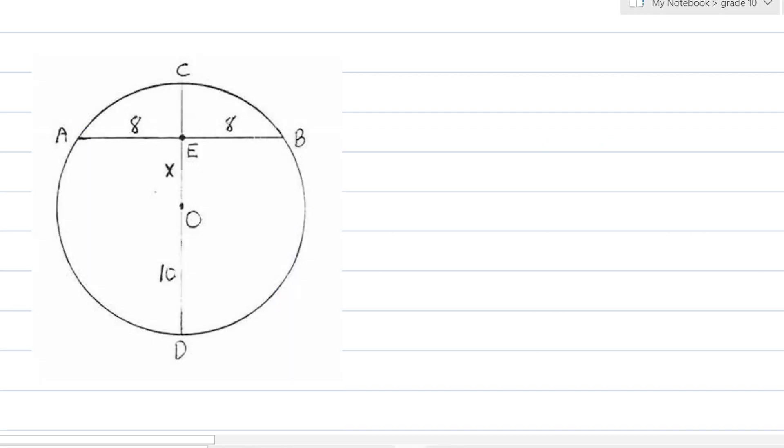Now, this example is pretty much the same thing. Let's connect this. OB is a radius. OD is also a radius. Therefore, this is 10. A diameter that bisects a chord is perpendicular to the chord.